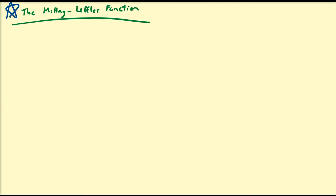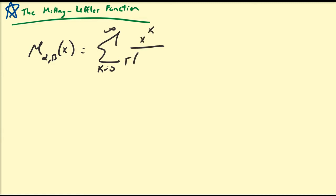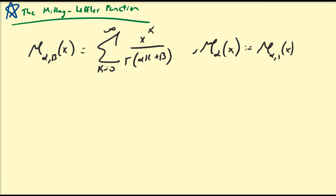Hello there. In the last video we introduced the Mittag-Leffler function and evaluated it at some particular values. The Mittag-Leffler function of two variables, E_{α,β}(x), is defined as the infinite series: the sum from k=0 to infinity of x^k divided by Gamma(αk + β), where the one-parameter version E_α(x) is defined as E_{α,1}(x).